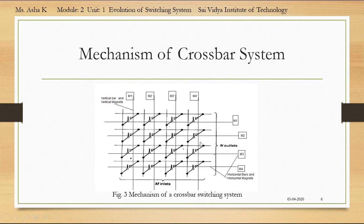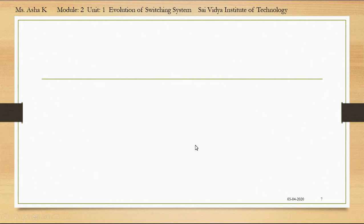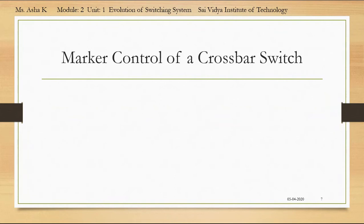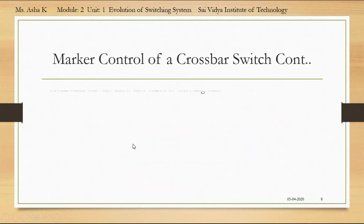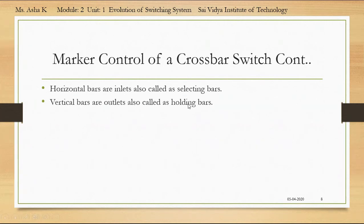A crossbar switch has no intelligence; hence marker control of a crossbar switch is necessary, as shown in figure 4. Marker control of a crossbar switch consists of resistors and a marker. The marker control has horizontal bars — or inlets — also called selecting bars, and vertical bars also called holding bars.